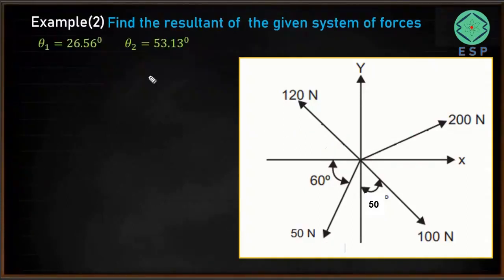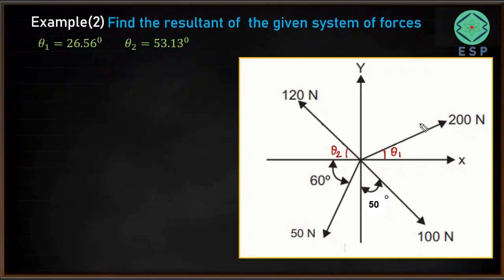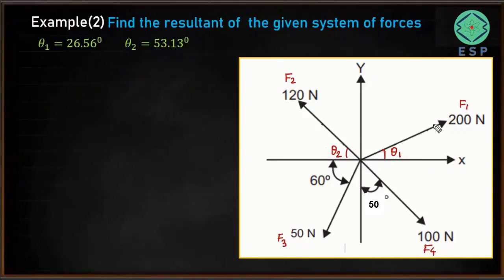So we have theta 1 as 26.56 degrees and theta 2 as 53.13 degrees. Now let's name the forces: F1 is 200 Newton, F2 is 120 Newton, F3 is 50 Newton, and F4 is 100 Newton. We now know the angles made by each force with respect to the x or y axis. The angle for F3 is 60 degrees. The next step is to resolve all forces along x and y directions.